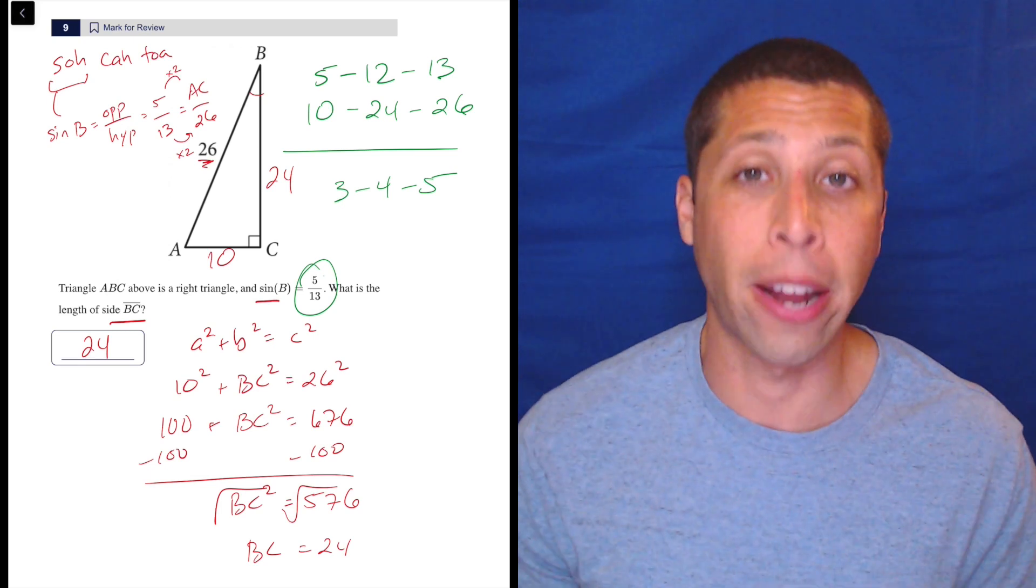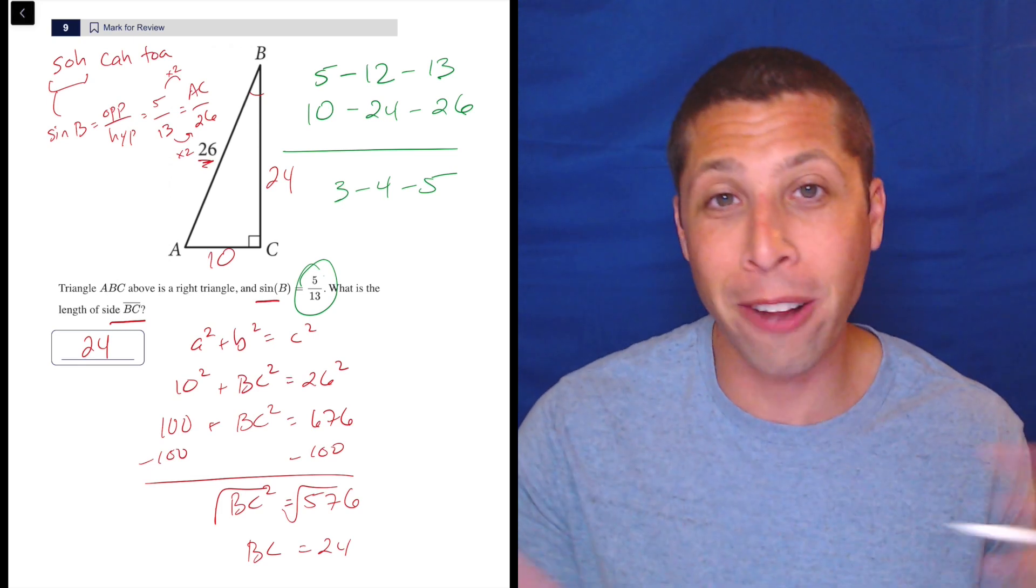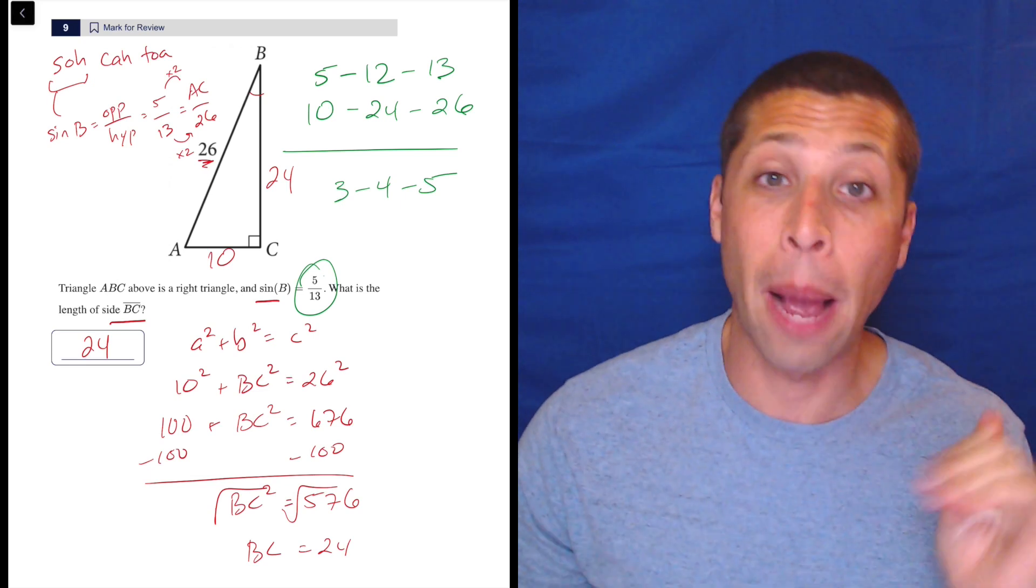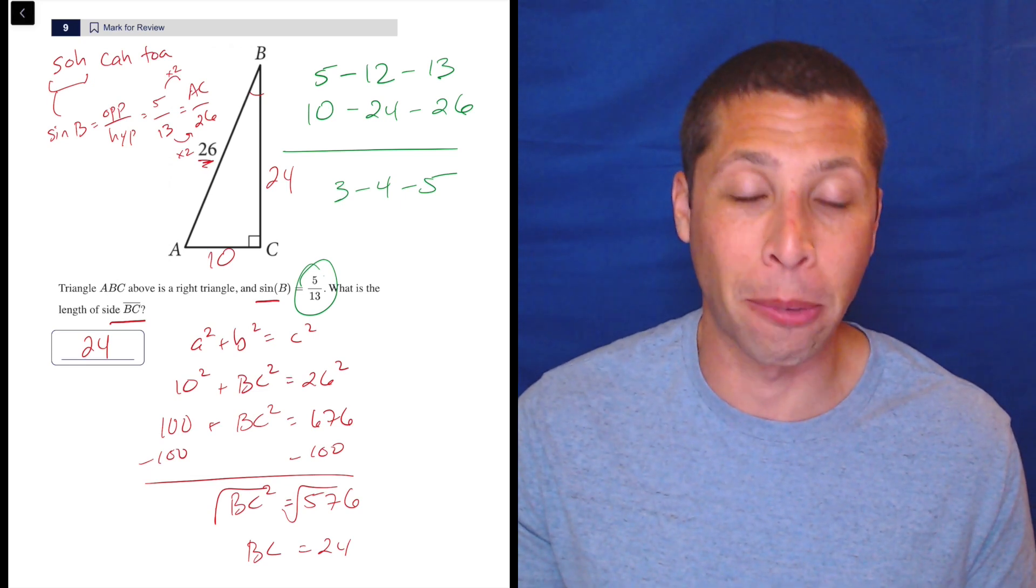The other one that really comes up a lot, many of you already know it, is 3, 4, 5. That's another Pythagorean triple that is very common. We will see it on similar triangles questions, right triangles questions, and trigonometry questions. So if you get comfortable with it, it's going to save you a couple seconds here and there on some hard geometry.